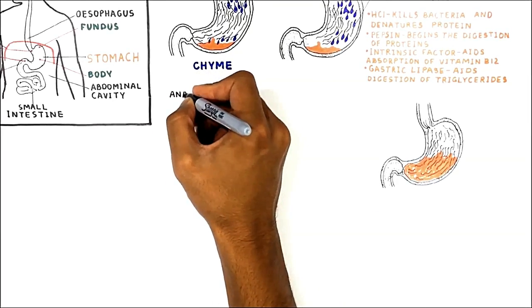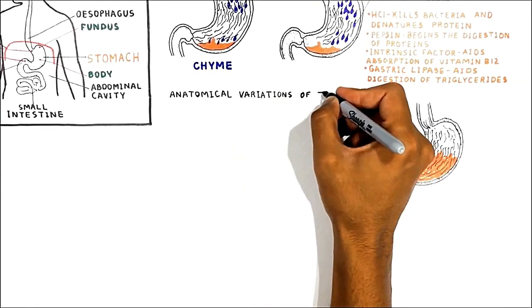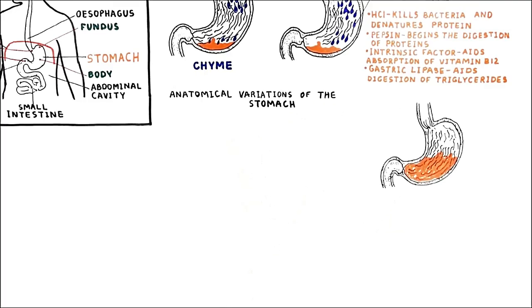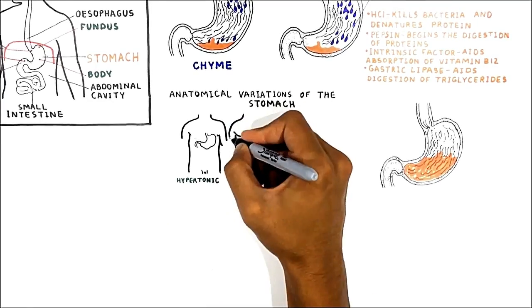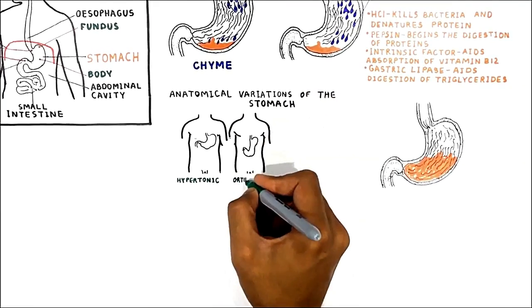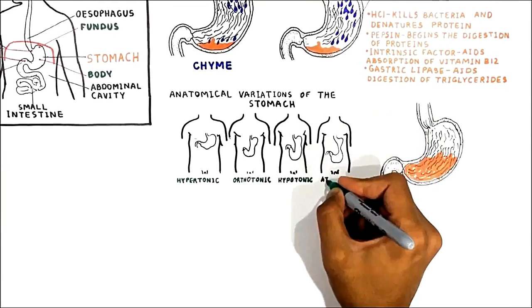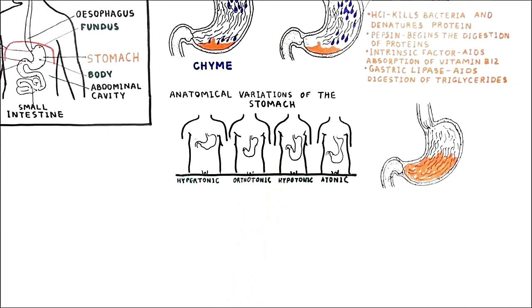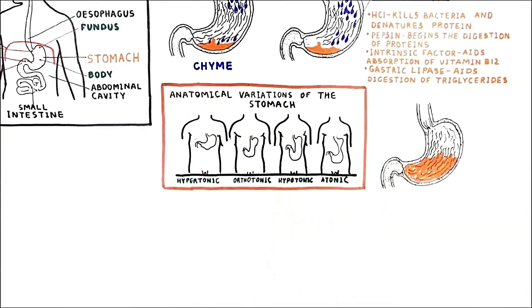It is very interesting that the stomach can have many variations in position and contour, which has an impact on body habitus. The four recognized principal functional types of stomach are known as hypertonic, orthotonic, hypotonic, and atonic. In hypotonic and atonic types the axis of the stomach is more longitudinal, whereas in the orthotonic and particularly the hypertonic types it is more transverse, and these variations have an impact on body habitus as you can see.